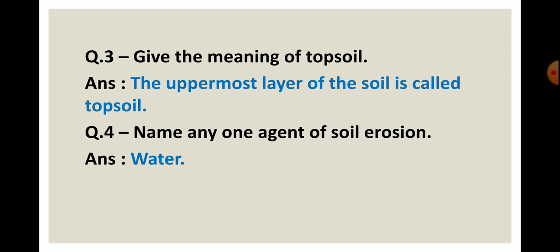Next question, give the meaning of topsoil. Ismein aapko topsoil ka meaning batana hai ya phir topsoil kise kahte hain? So, answer is, the uppermost layer of the soil is called topsoil. It means, jo humare soil ki three layers hoti hain, unh three layers mein, jo sabse uppermost layer hoti hai soil ki, usko hum topsoil kahte hain. So, answer is, the uppermost layer of the soil is called topsoil.